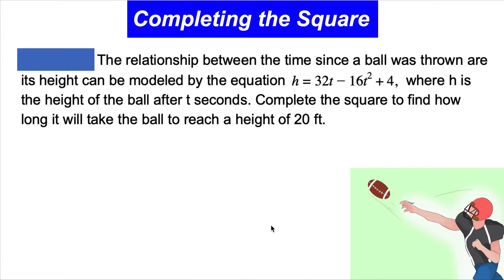The relationship between the time since a ball was thrown and its height can be modeled by the equation h = 32t - 16t² + 4, where h is the height of the ball after t seconds. Complete the square to find how long it will take the ball to reach a height of 20 feet.